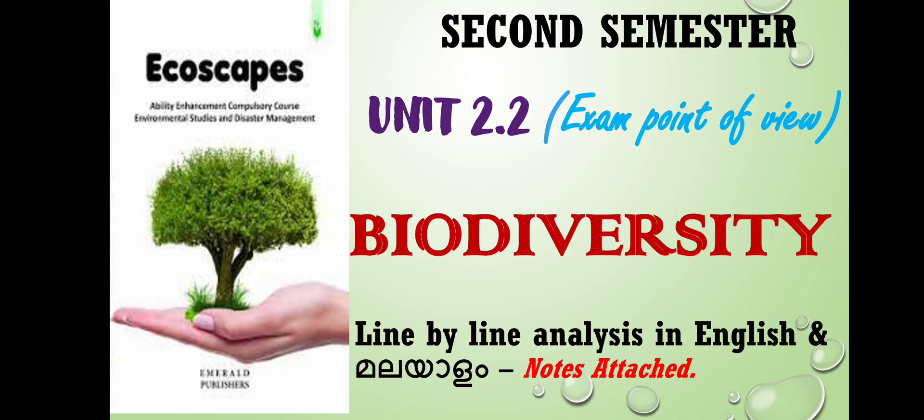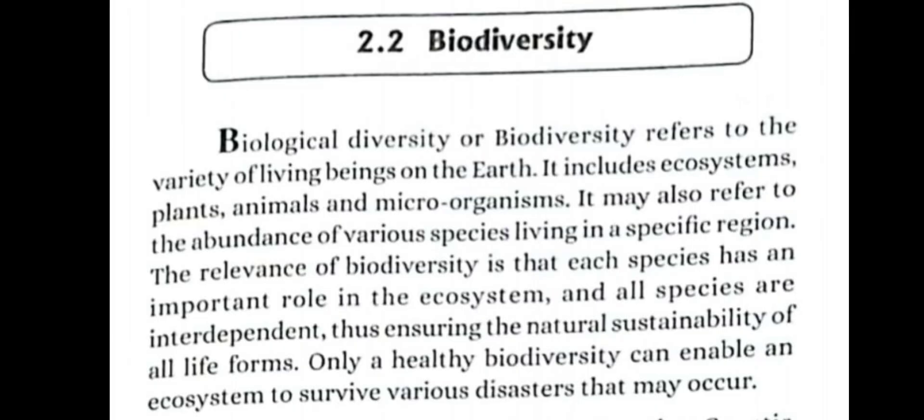What do we mean by Biodiversity? Biological diversity or biodiversity refers to the variety of living beings on the earth. It includes ecosystems, plants, animals and microorganisms. It may also refer to the abundance of various species living in a specific region. The relevance of biodiversity is that each species has an important role in the ecosystem and all species are interdependent, thus ensuring the natural sustainability of all life forms.